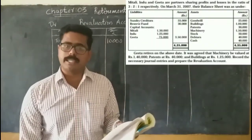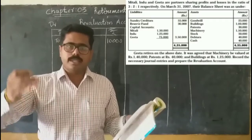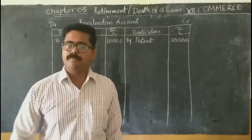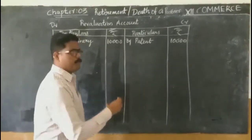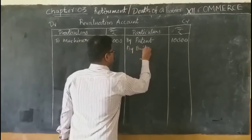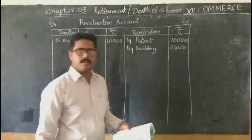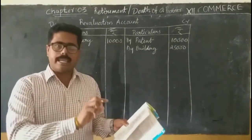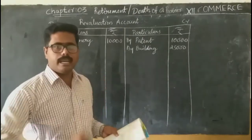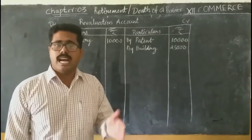The next item is building. As per the last balance sheet, building was 1,00,000, and its current value is 1,25,000 — so there is an increase of 25,000. Building increased, which is a gain to the organization, so we credit 'by building — 25,000'. Only the changes are recorded in the revaluation account, which is why it is also known as the profit and loss adjustment account.